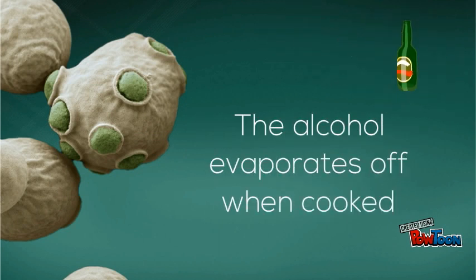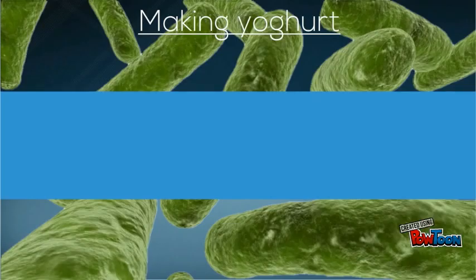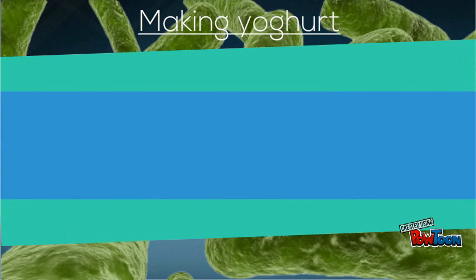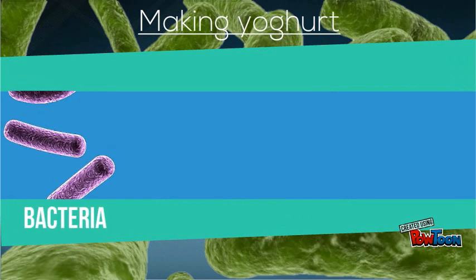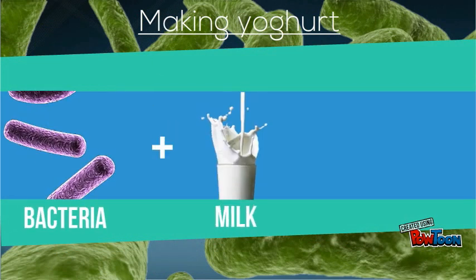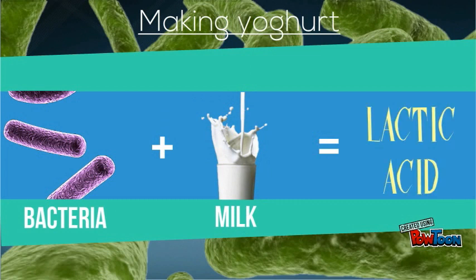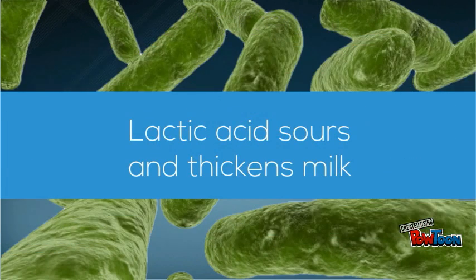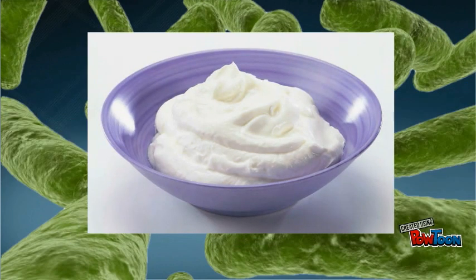By adding bacteria to milk we can make yogurt. The bacteria feed on the lactose sugar in the milk to make lactic acid. This lactic acid thickens the milk and makes it sour to give yogurt its characteristic taste and texture.